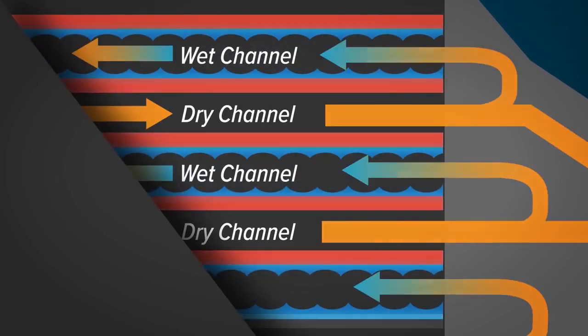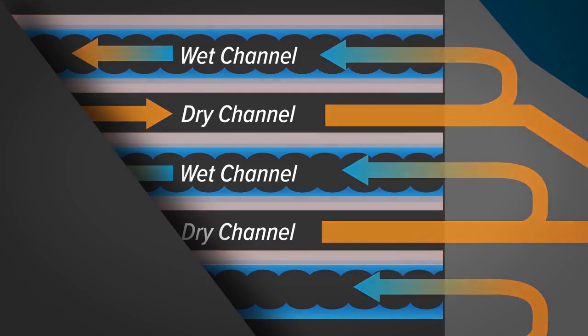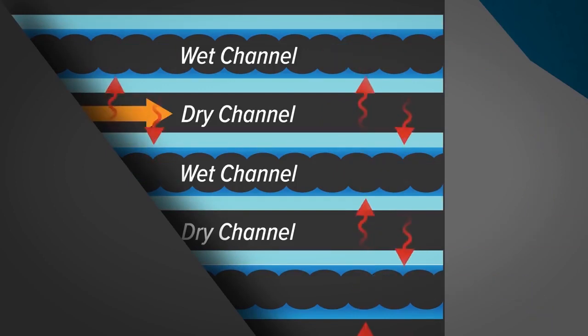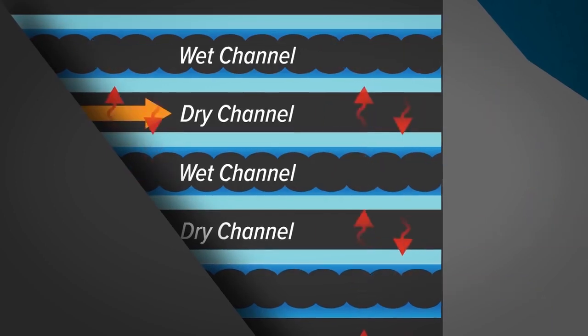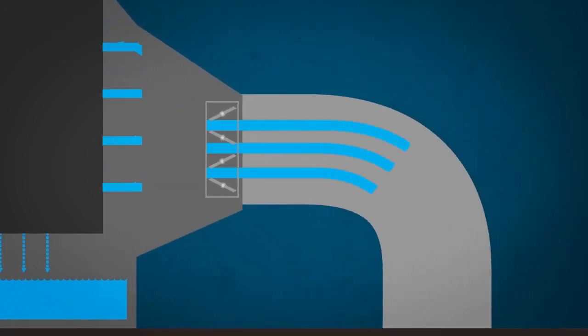The evaporative process cools the wet channel walls. As these walls cool, they absorb heat from the dry channel air, cooling the air delivered to the building. The portion of air supplied to the building is controlled by a damper that is set for the specific application.